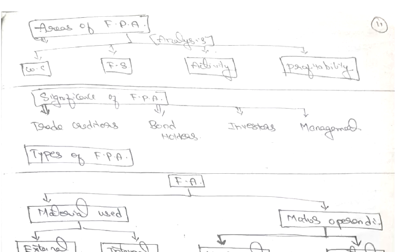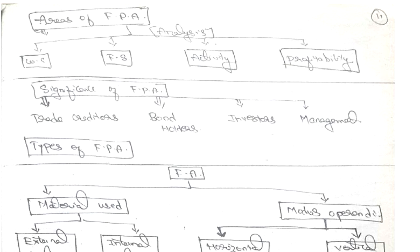Now, the areas of financial performance analysis. Analysis can be done on the financial statement, activity, profitability, working capital. Significance of financial performance analysis is the trade, creditors, bondholders, investors, management.